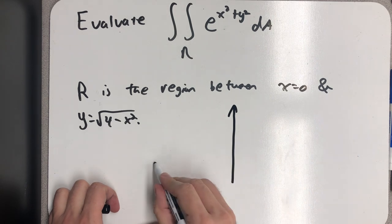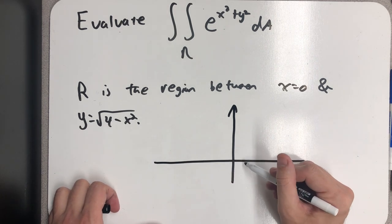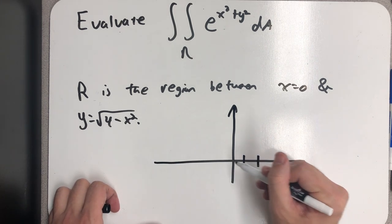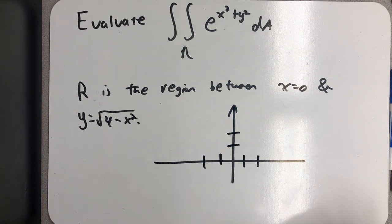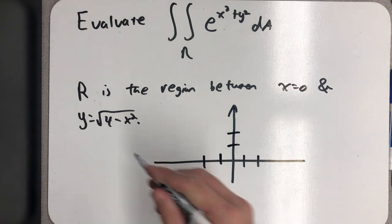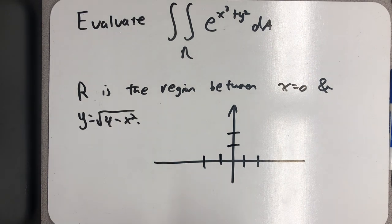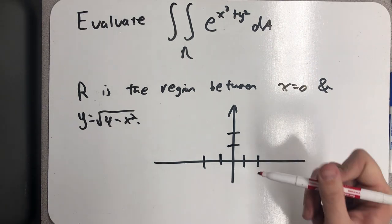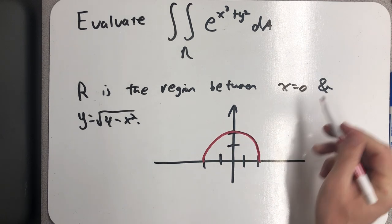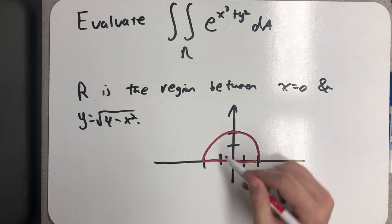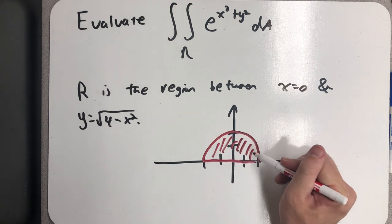Well, this region of integration, if I think about it, this is a semicircle of radius 2. Top half of a circle, that is. And x equals 0 is the y-axis, so I'm really just integrating over this half circle.